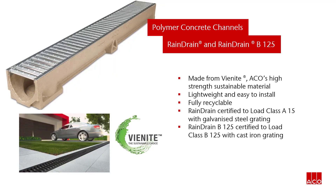ACCO Rain Drain and Rain Drain B125 are manufactured from Vionite, ACCO's high strength sustainable material. It is lightweight, easy to install and fully recyclable. The Rain Drain comes with standard galvanised steel grating and is certified to load class A15. Rain Drain B125 with cast iron grating is certified to load class B125.